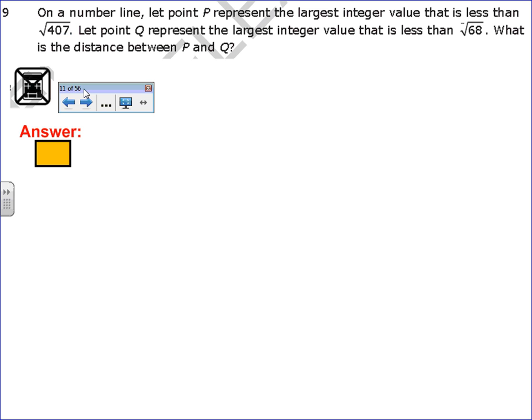This one's a little bit bigger. It says, on the number line, let point P represent the largest integer value that is less than √407. Let point Q represent the largest integer value that is less than -√68. What is the distance between P and Q? So again, I'm going to estimate the √407. That is going to be between 20 squared, which is 400, and 21 squared, which I think is 441.